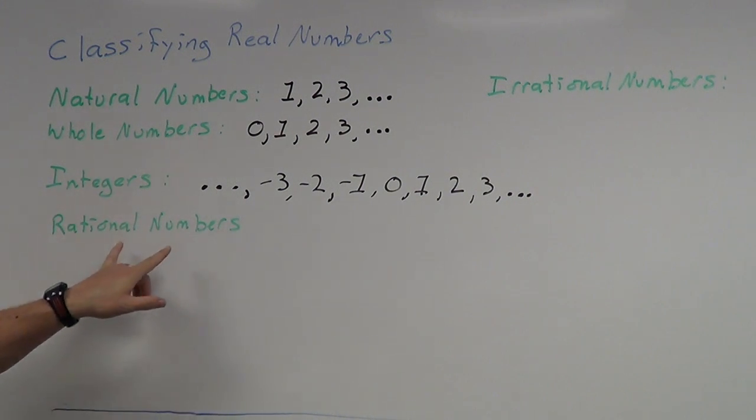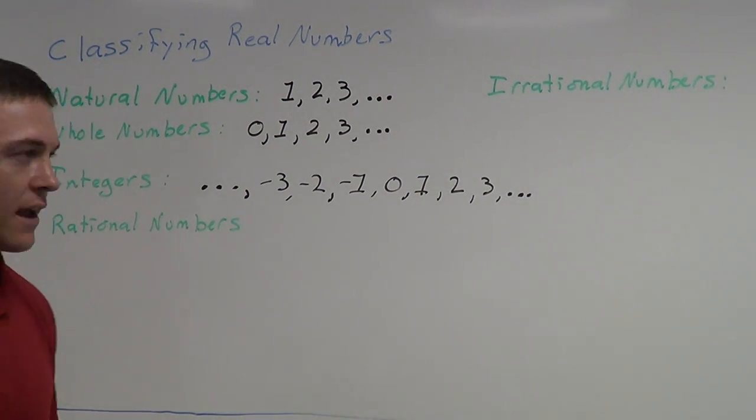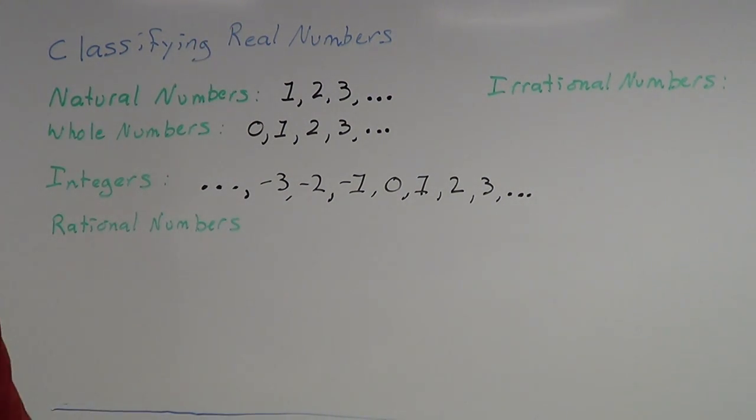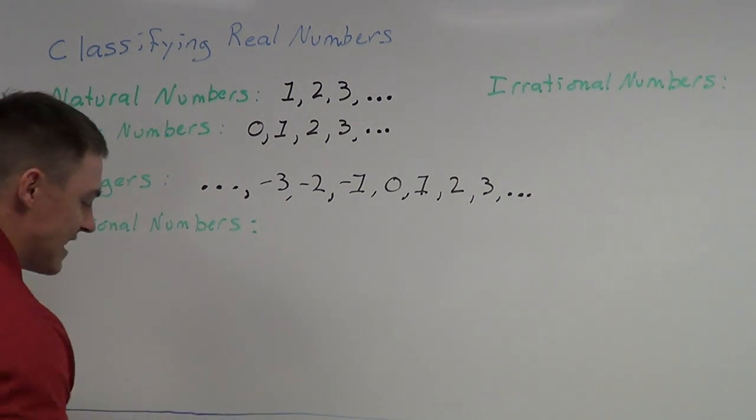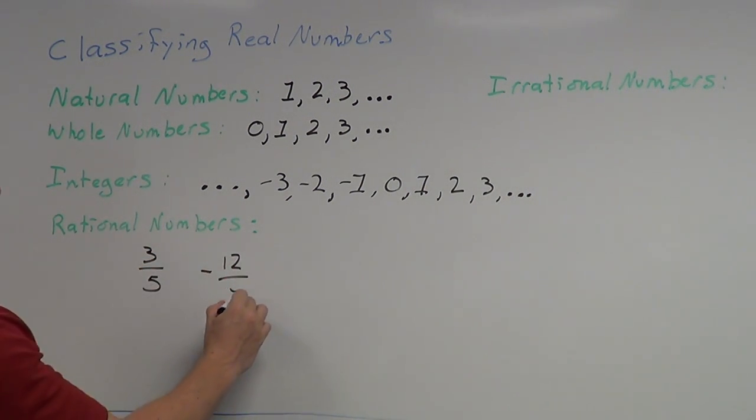Next, second to last here is the rational numbers. One way I like to think of rational numbers is rational numbers are fractions. So far we've looked at everything that just looks like a number. Now we've got to start defining our fractions. Rational numbers is any number that you can make into a fraction. For example, three-fifths, negative twelve-sevenths.